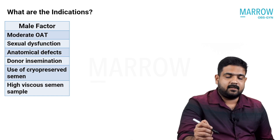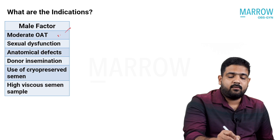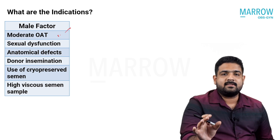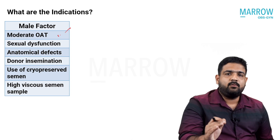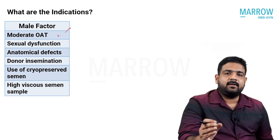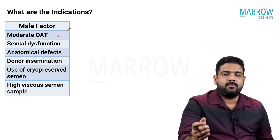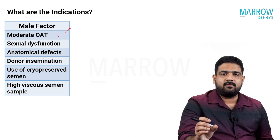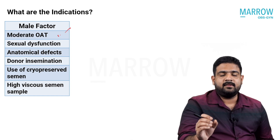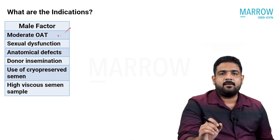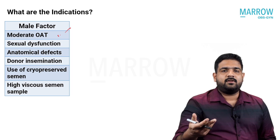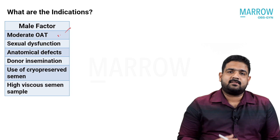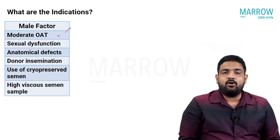For male factor, the main indication is moderate OAT — moderate oligo-asthenoteratozoospermia. Moderate means a count between 5 to 15 million and motility between 15 to 30%. These men would definitely benefit from IUI. Whereas if the degree of problem is very severe — count less than 5 million or very low motility — they may not benefit from IUI. So mild to moderate OAT is the indication.